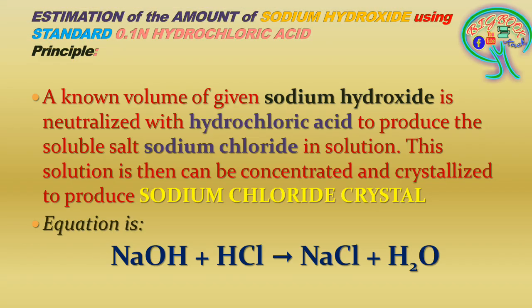Coming to the next slide — the principle: a known volume of the given sodium hydroxide is neutralized with hydrochloric acid to produce the soluble salt sodium chloride in solution. This solution can then be concentrated and crystallized to produce sodium chloride crystals. The equation is: NaOH + HCl → NaCl + H₂O.